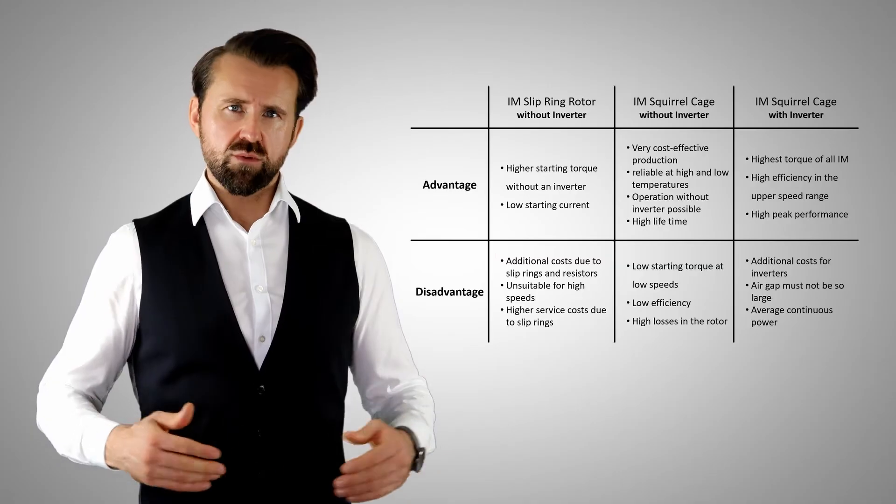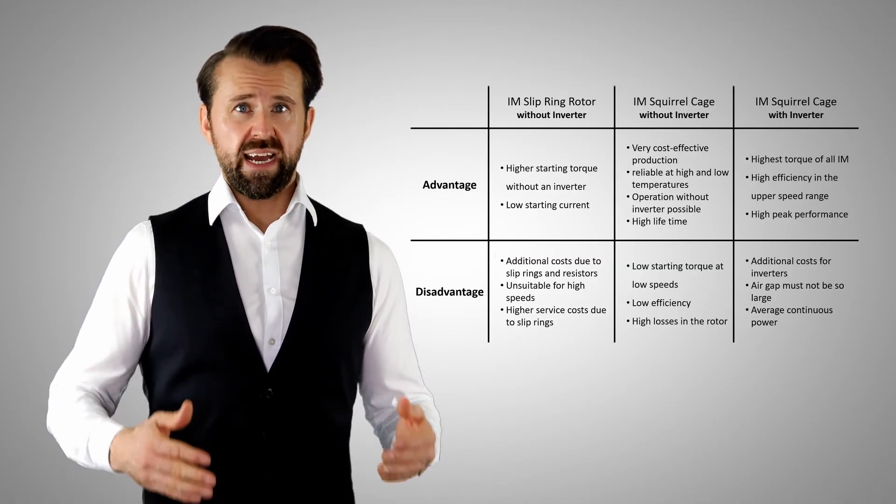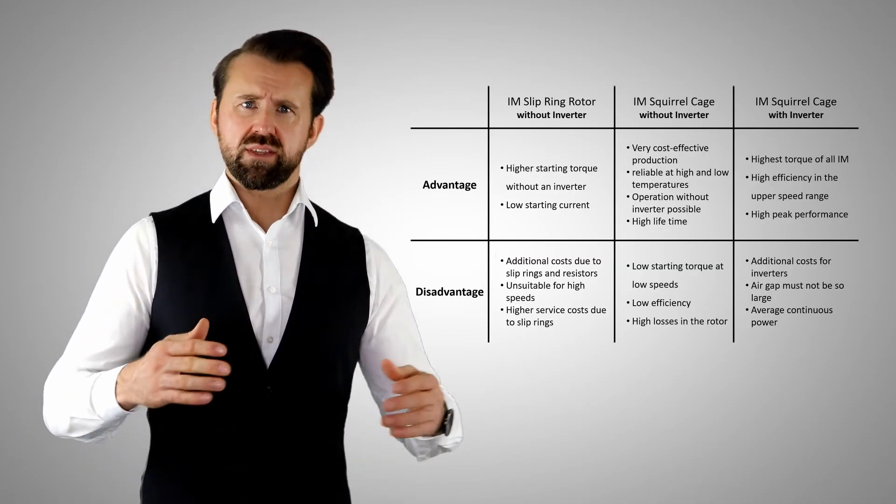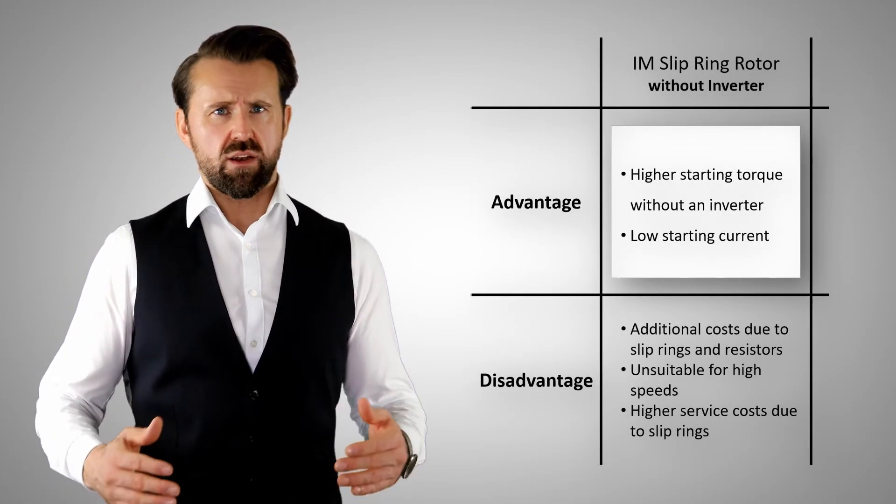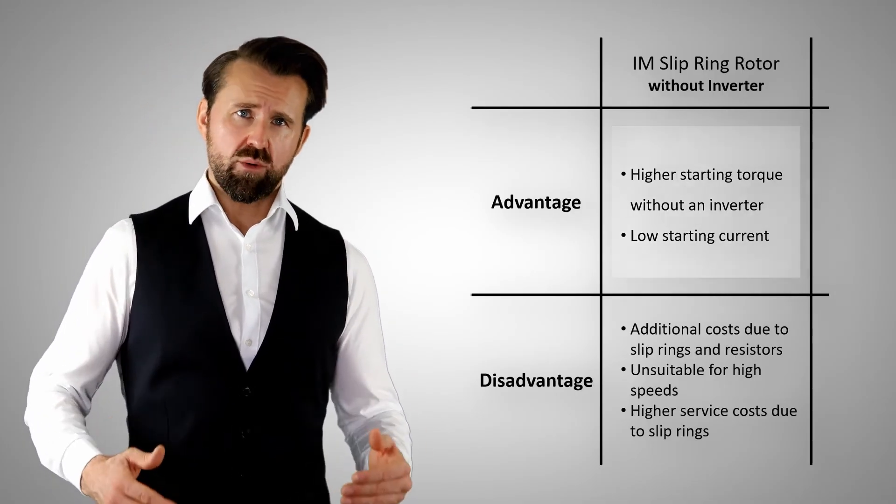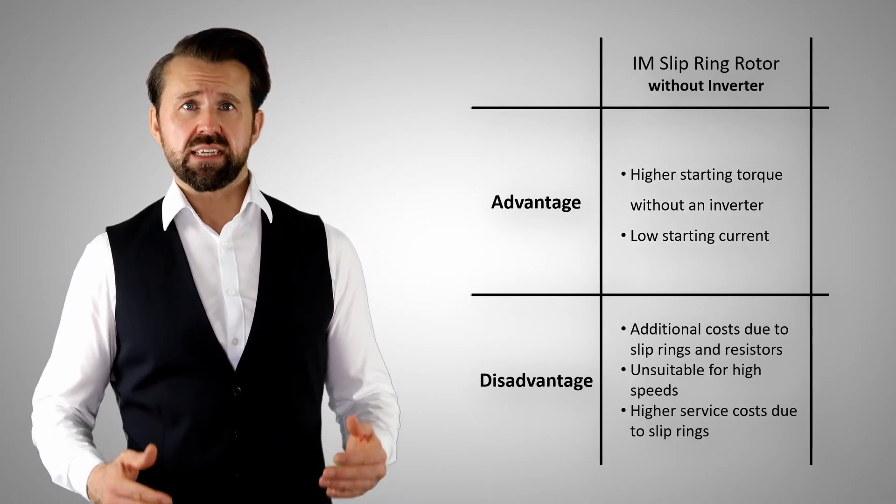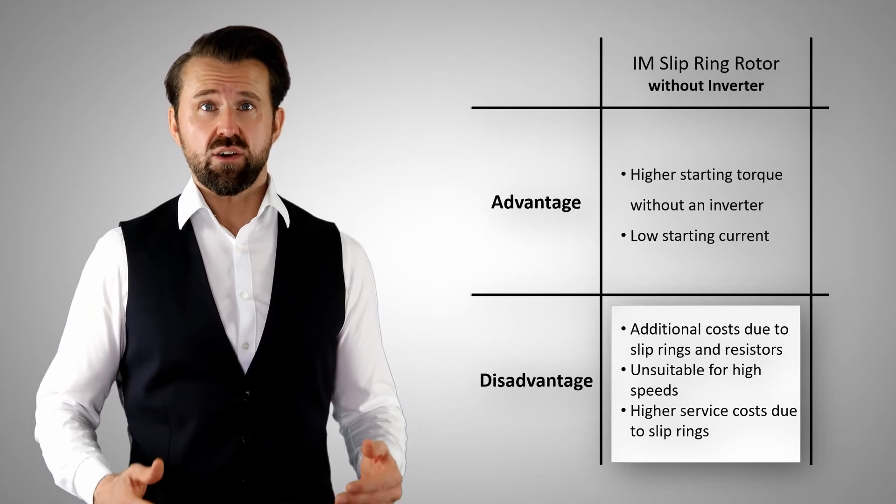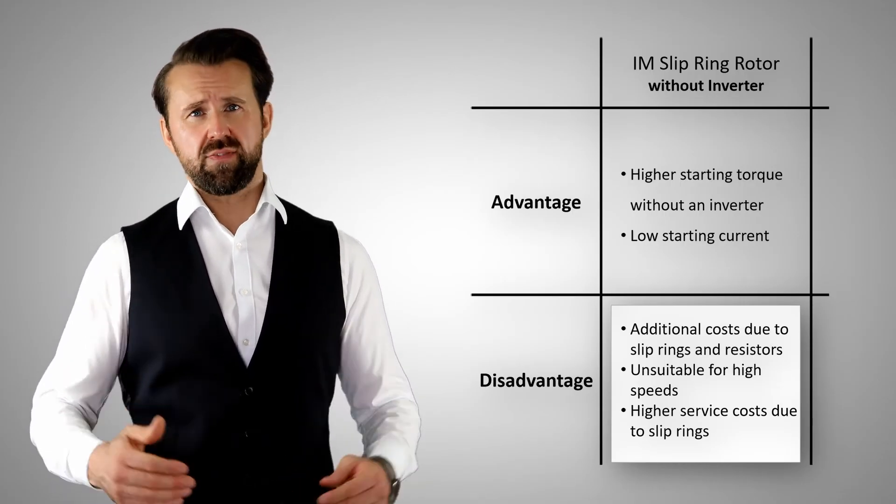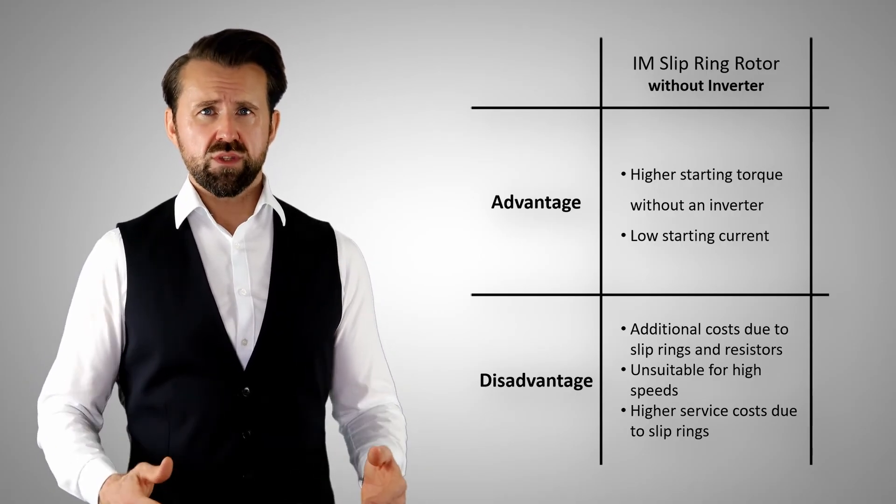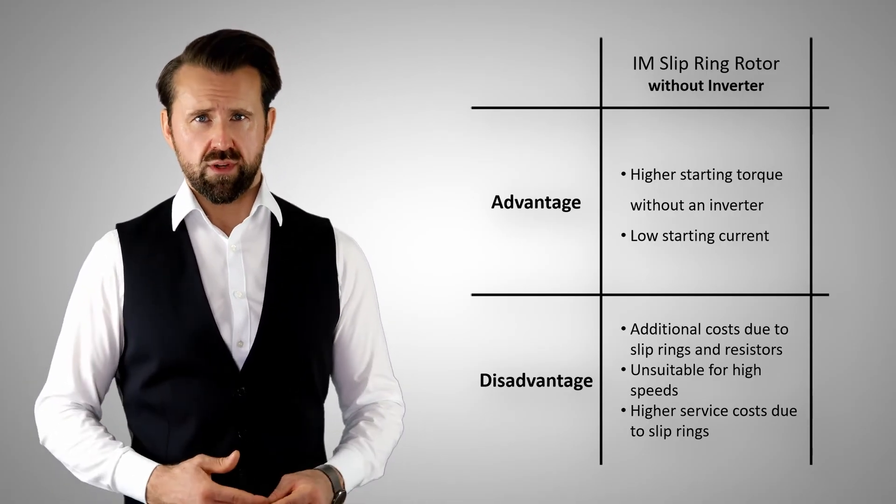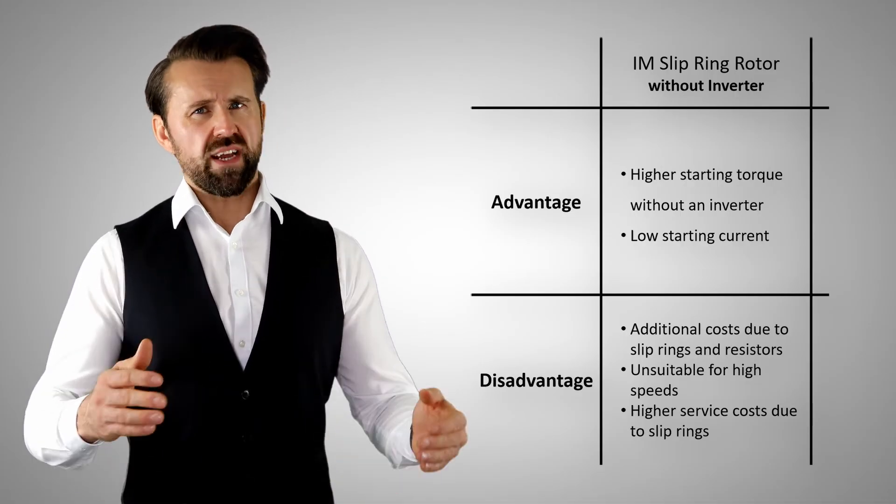Now let's take a look at the advantages and disadvantages of induction motors with slip ring rotor and with squirrel cage rotor, with and without an inverter. The main advantage of induction motors with slip rings is the higher torque in the lower speed range and the lower starting current. However, the additional cost of the slip rings and also the production of the rotor with the windings is significant. Therefore, today the slip ring rotor is only used for very large electrical motors where the inverter would be too expensive.